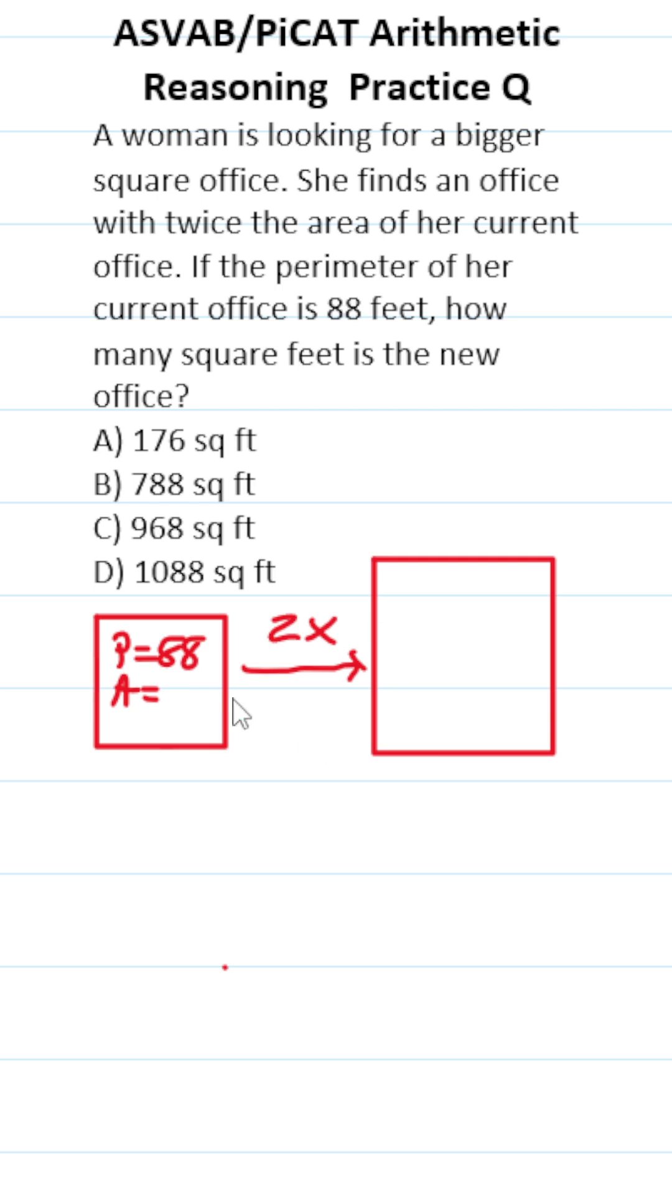If it's helpful to make a little sketch like this, go ahead and do so. We know the bigger office has twice the area of the smaller office, and we know the perimeter of the smaller square office is 88 feet. So we first have to figure out what the area of this smaller square office is.